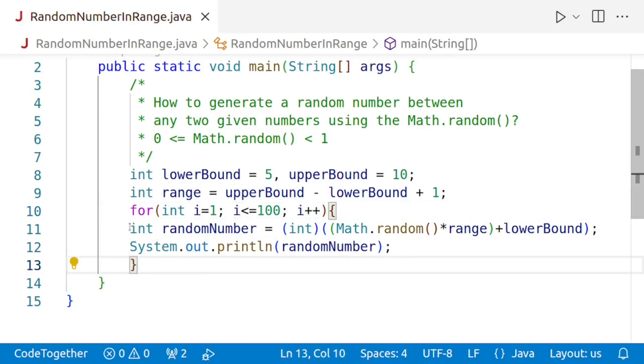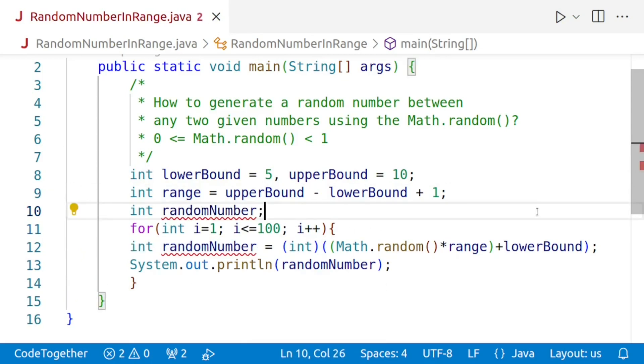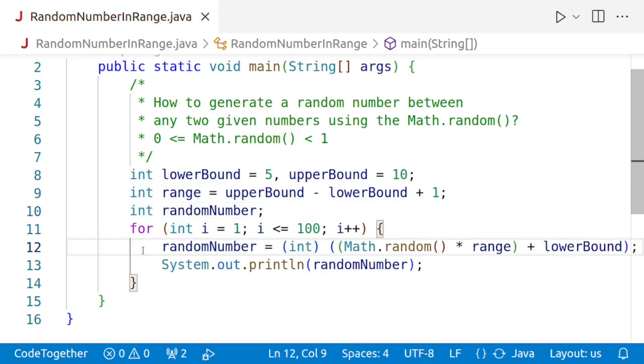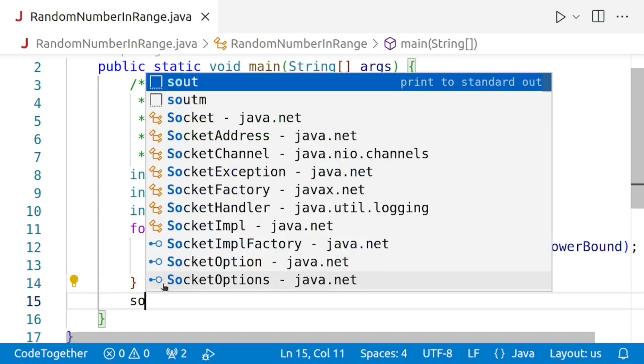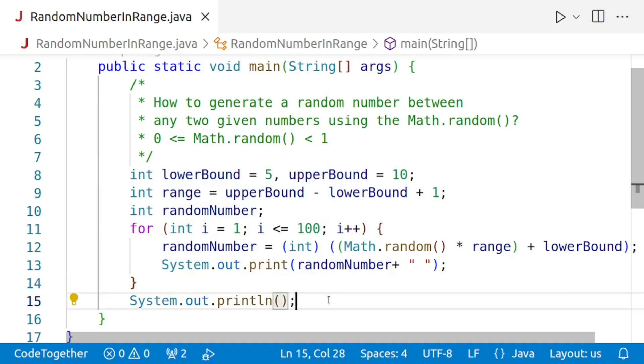It's not a good practice to declare a variable within the loop, so we'll move the declaration outside the loop and then I'll remove the declaration from within the loop. I'll reformat the code and in order to see it clearly, we'll print the numbers next to each other with a space, and then when all the numbers are printed, we'll display a new line.